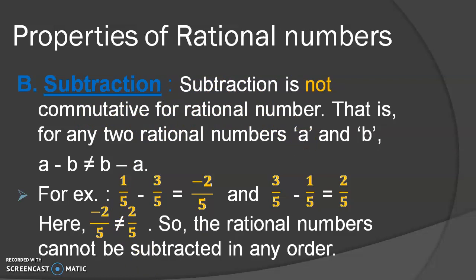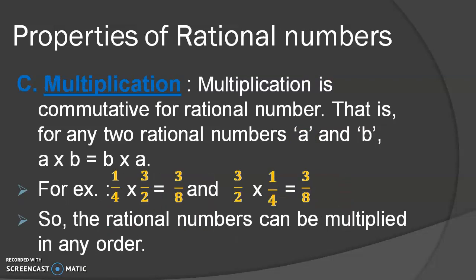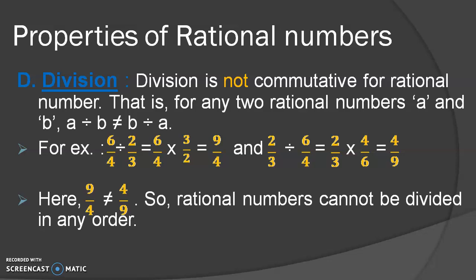I hope you are getting what I am trying to explain regarding these various properties. Just like addition, two rational numbers can be multiplied in any order and the obtained result will be the same in both cases. That means if A multiplied by B, then the same answer will be for B multiplied by A. You can see the simple example given here. Hence, multiplication is commutative for rational numbers. In division, just like subtraction, the answer for two rational numbers A and B cannot be the same if we are dividing in any order. Hence, division is not commutative for rational numbers.